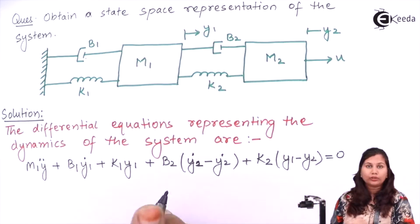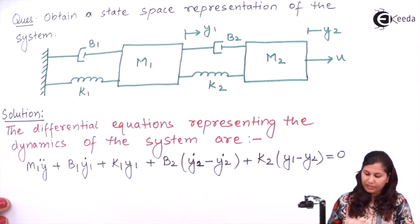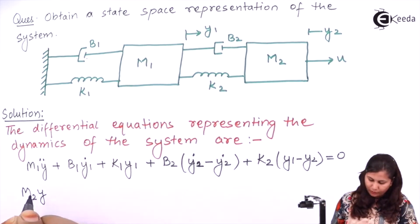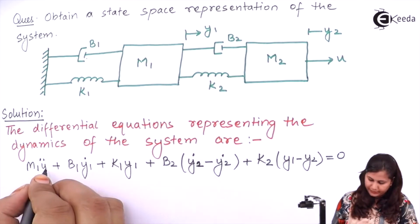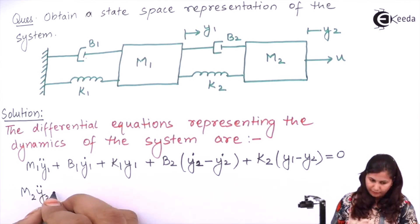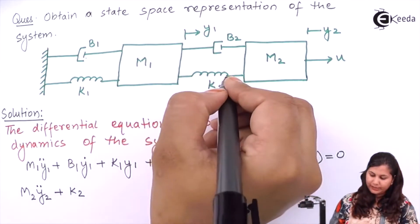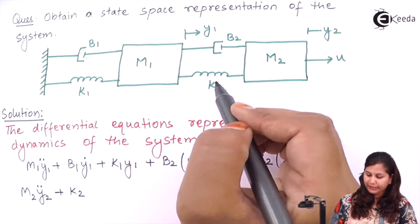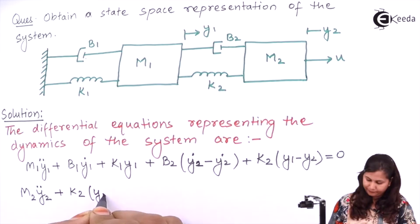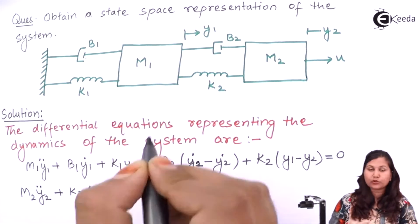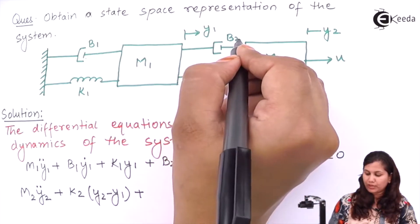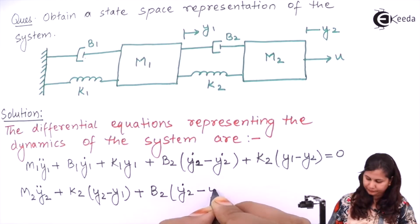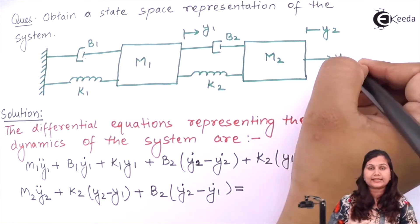For spring k2 it will be (y1 minus y2). This completes the nodal equation at node y1. Now for node y2, we write m2 y2 double dot. Since k2 is connected between y1 and y2, it contributes k2(y2 minus y1), and damper b2 contributes b2(y2 dot minus y1 dot) equals to external force u.